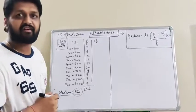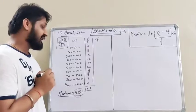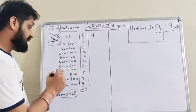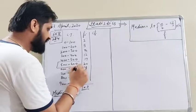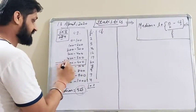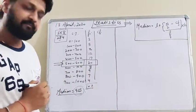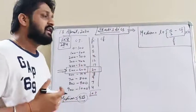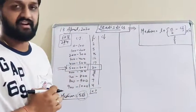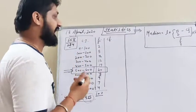Since the median in this question is given as 525, can you identify the median class? 525 means it will lie between 500 and 600, so this is considered as the median class. Now first of all we have to find the values of x and y, so let's start writing the cumulative frequencies. This is a less-than type question so we will go on adding.